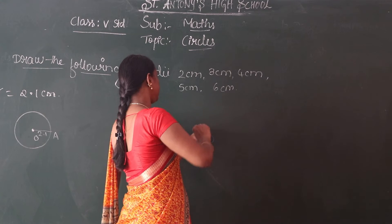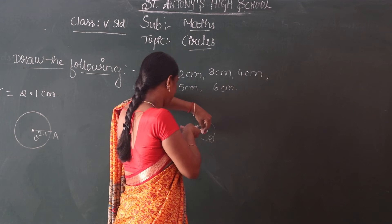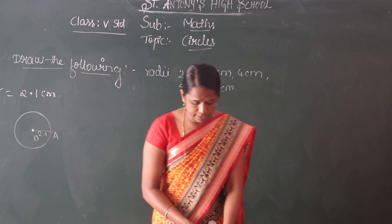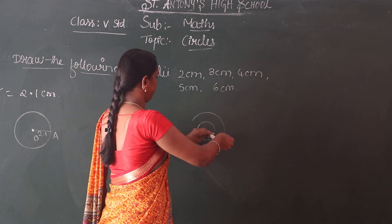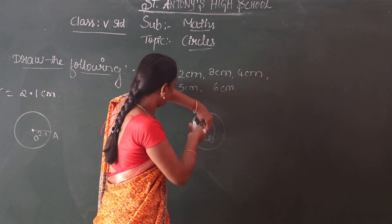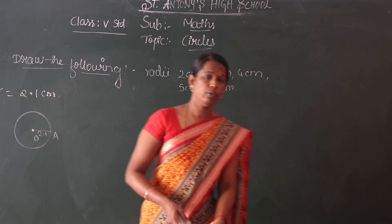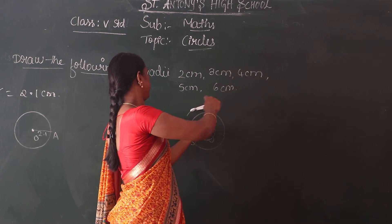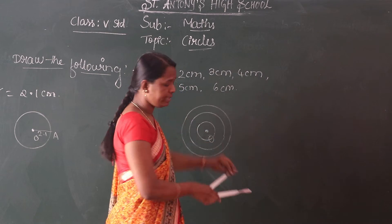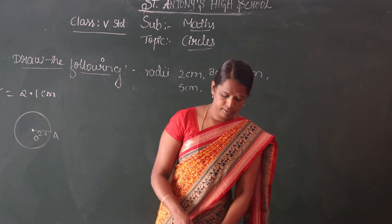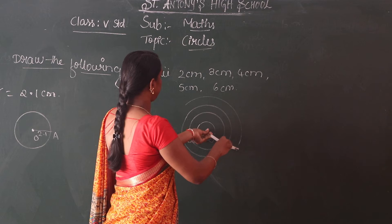Draw a circle of 2 cm. Radius is 2 cm. And then take 3 cm as a radius. And then 4 cm starting from O, 4 cm. Then 5 cm using the same method.